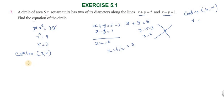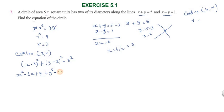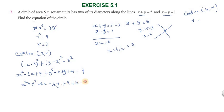Writing the equation: (x minus h) squared plus (y minus k) squared equals r squared, so (x minus 3) squared plus (y minus 2) squared equals 9. Expanding using the a minus b whole square formula: x squared minus 6x plus 9 plus y squared minus 4y plus 4 equals 9. Rearranging: x squared plus y squared minus 6x minus 4y plus 4 equals 0.